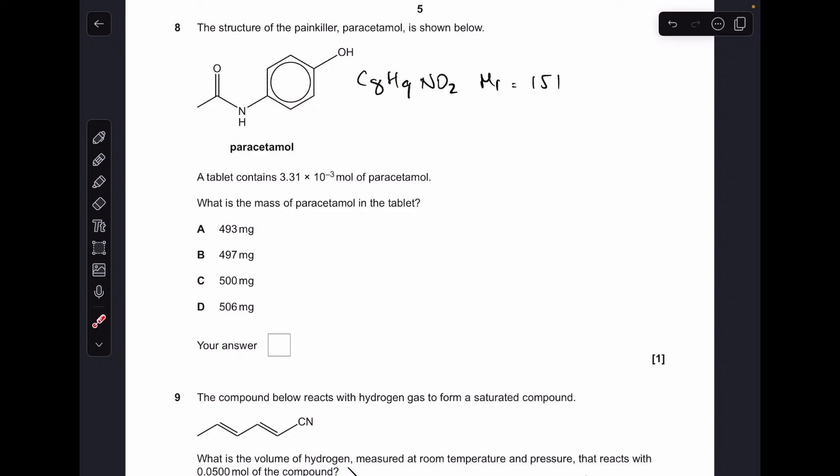Number eight. The first thing we need to do is work out the MR of paracetamol. You can see there's its molecular formula. So the MR comes out at 151. So to get the mass in the tablet, we need to do moles times MR, which comes out at 0.4998 grams. But they want it in milligrams. So it's 500 is the answer. So C.